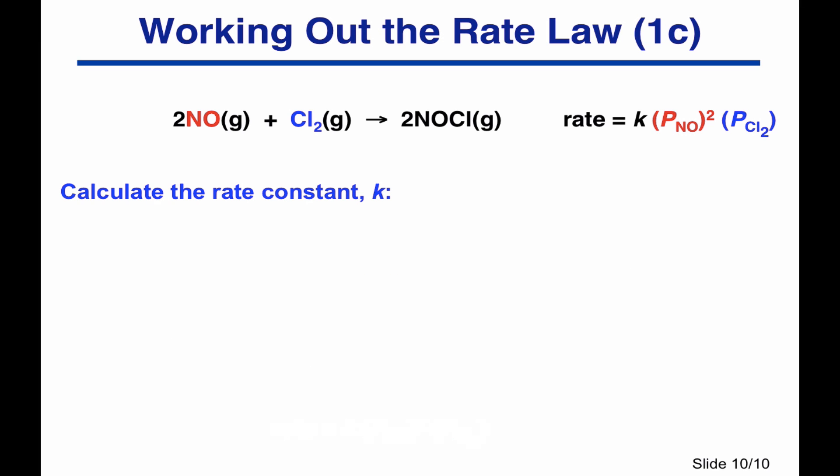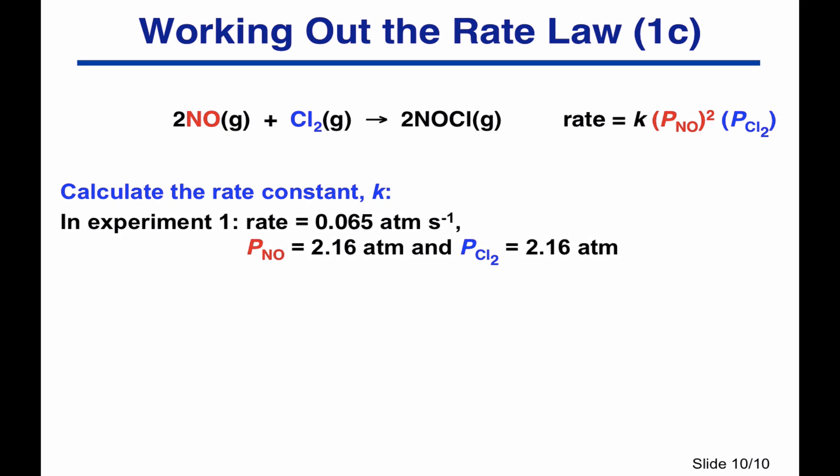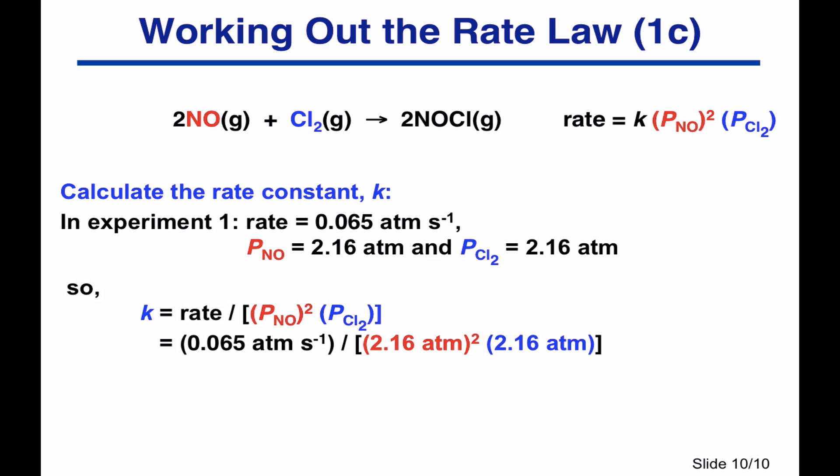The overall rate law is that the rate is proportional to the partial pressure of NO squared multiplied by the partial pressure of Cl₂ to the power one. To work out the rate constant using experiment one: the rate was 0.065 atm/s with partial pressures of NO and Cl₂ of 2.16 atm. K equals the rate divided by the partial pressure of NO squared times the partial pressure of Cl₂. The units work out to atm⁻² s⁻¹, giving a rate constant value of 3.7 × 10⁻².